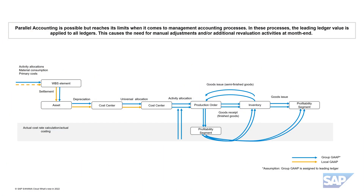Imagine the following situation: an investment project which consumes materials, activities, and other direct costs. When the investment project is finalized, it gets capitalized as an asset under construction and, in the end, as a finished asset. Depreciation kicks in, which ends up in a specific area of responsibility, typically represented by a cost center, whereby asset capitalization values differ between GAAPs. Depending on the situation, the cost on this cost center gets allocated. Up till here, handling multiple valuation views is covered, apart from the project settlement, which is based on the group valuation principle. Continuing the example, consuming these costs as activity allocation in a production process, inventory valuation upon completion of the production process, and the analysis by different market segments when sold, are only tracked by the group accounting principle.